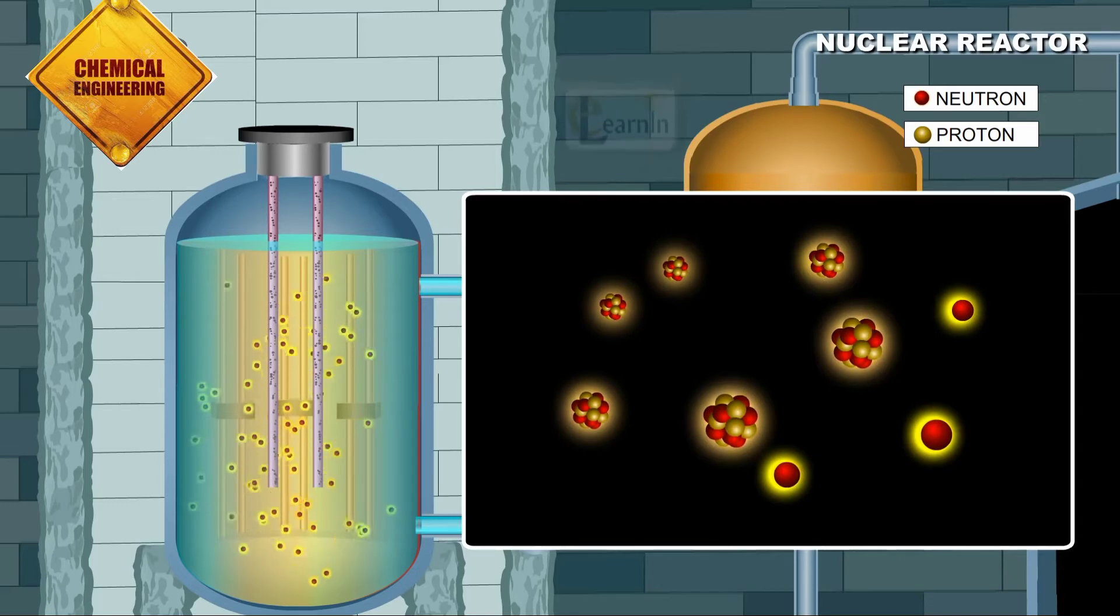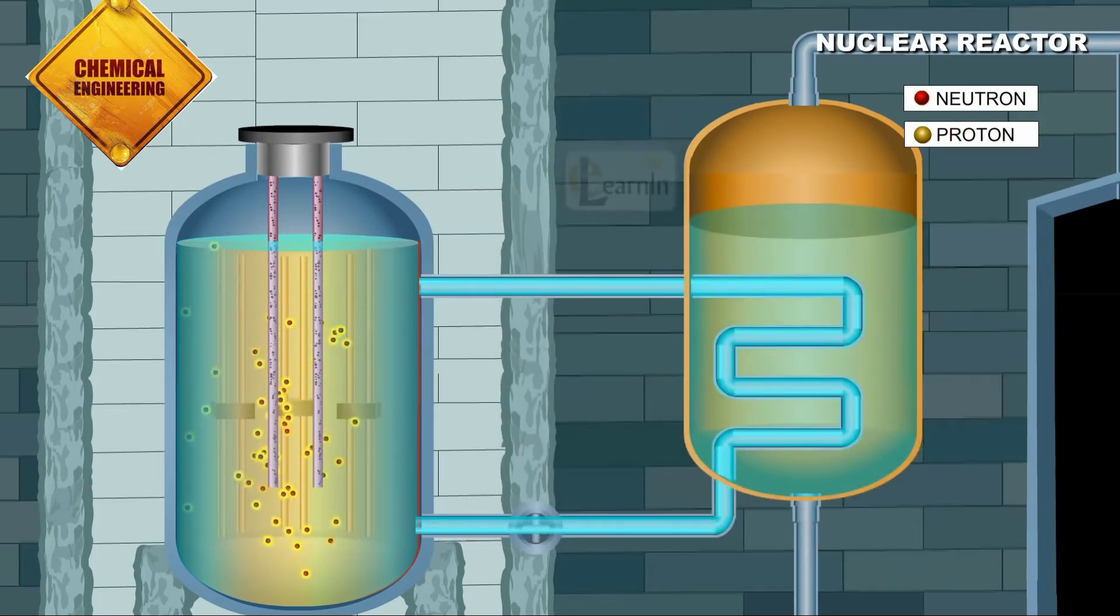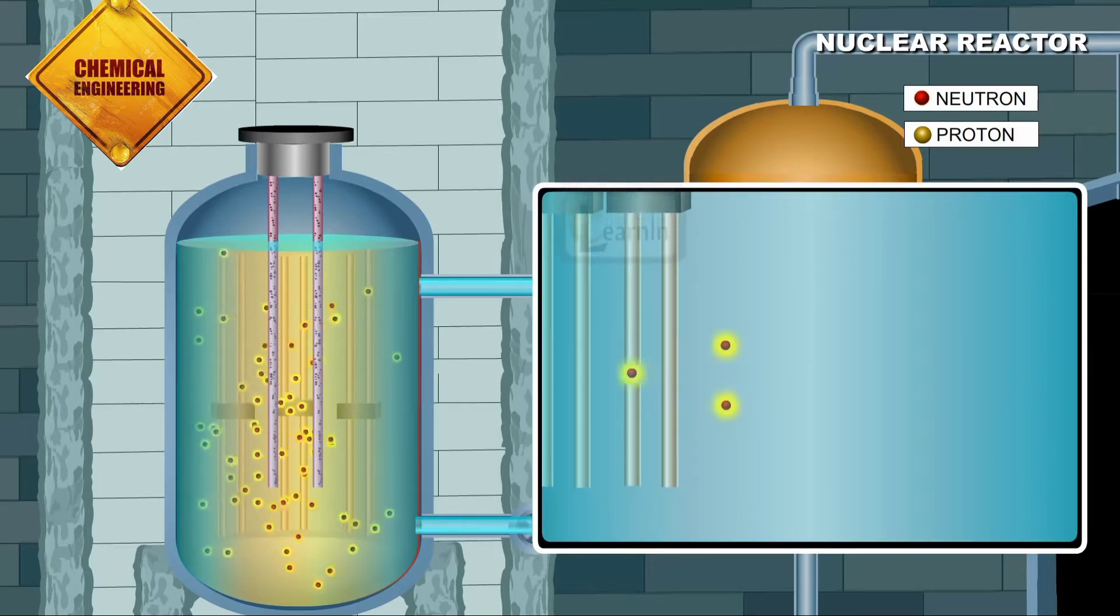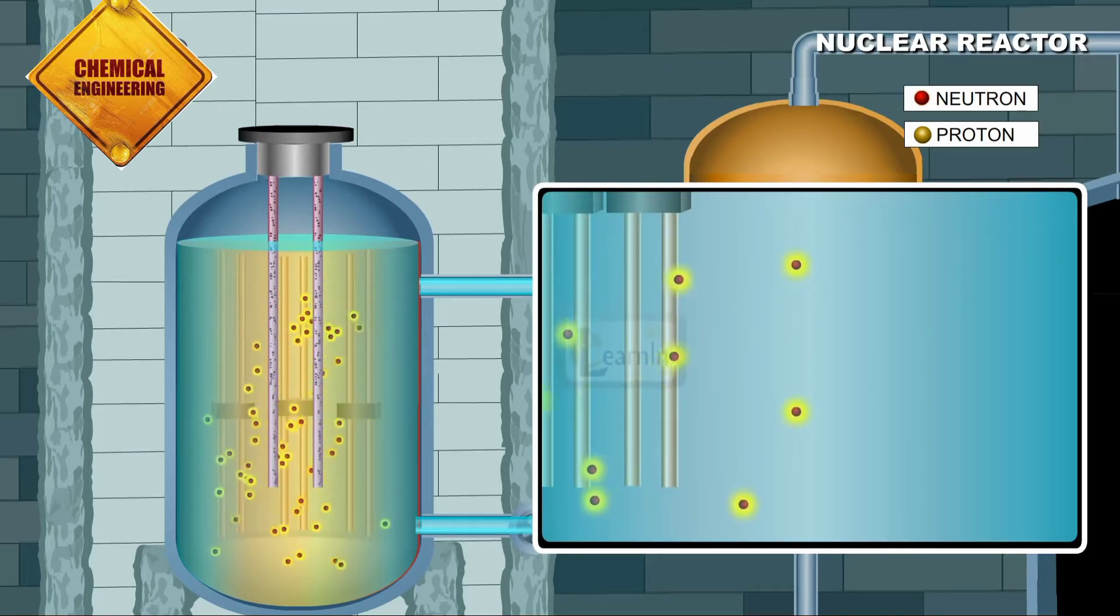This is where a moderator is extremely useful. Moderators have the capability to slow down, or in other words moderate, the speeds of these high energy neutrons so that they can in turn be used for a chain reaction to trigger multiple fission reactions of other uranium-235 nuclei.